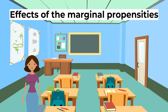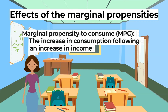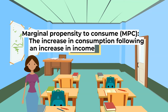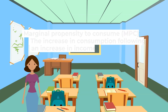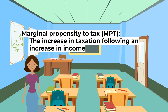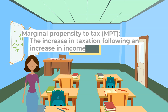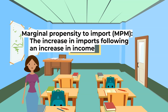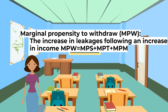What are the definitions of marginal propensities? Marginal propensity to consume, or MPC, is the increase in consumption following an increase in income. Marginal propensity to save, or MPS, is the increase in savings following an increase in income. Marginal propensity to tax, or MPT, is the increase in taxation following an increase in income. Marginal propensity to import, or MPM, is the increase in imports following an increase in income. Marginal propensity to withdraw, or MPW, is the increase in leakages following an increase in income. MPW equals MPS plus MPT plus MPM.